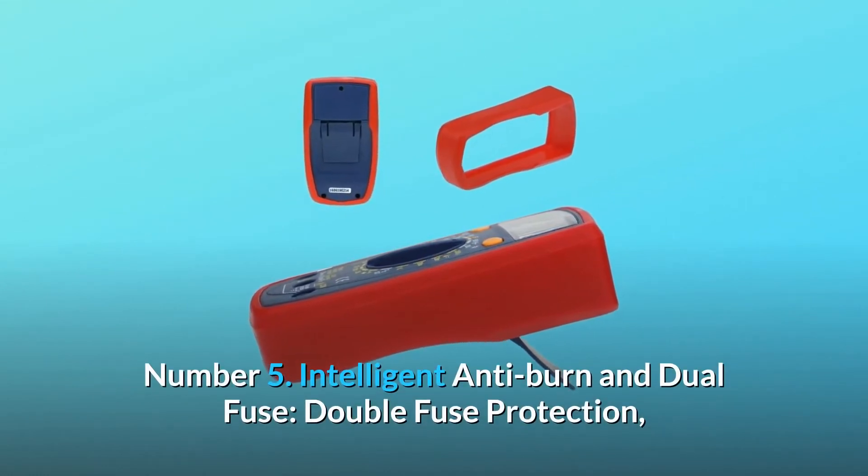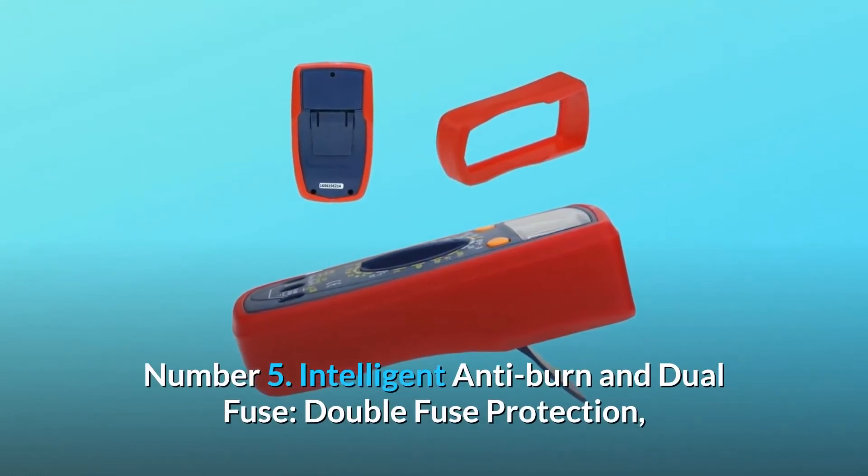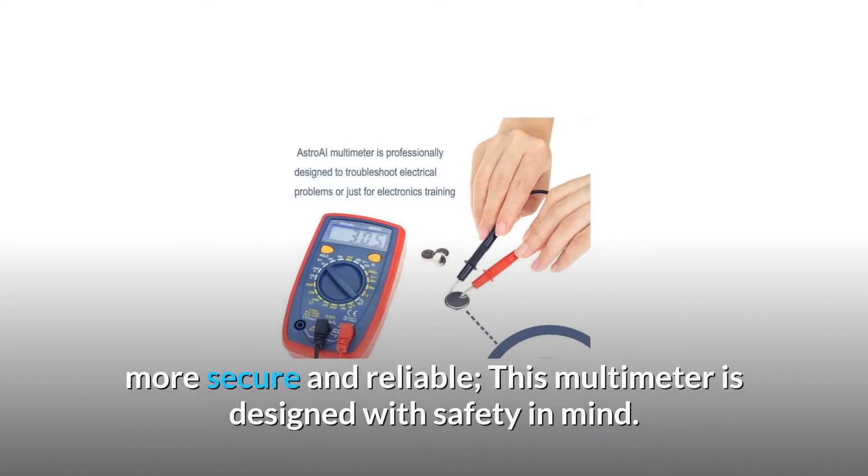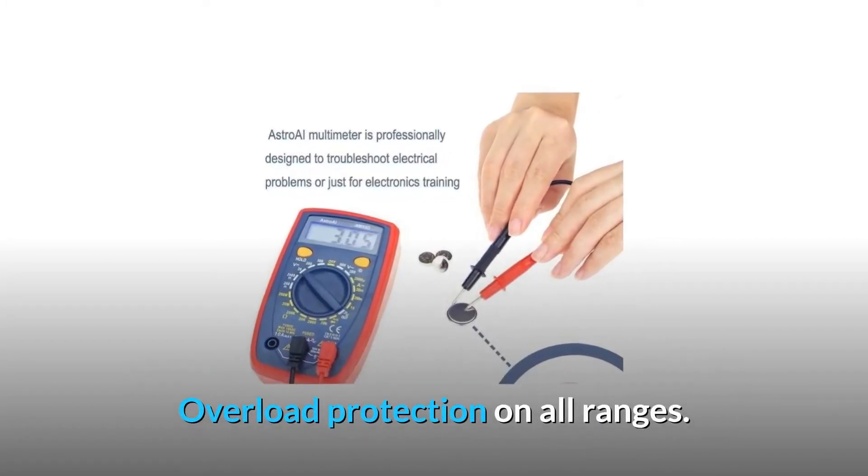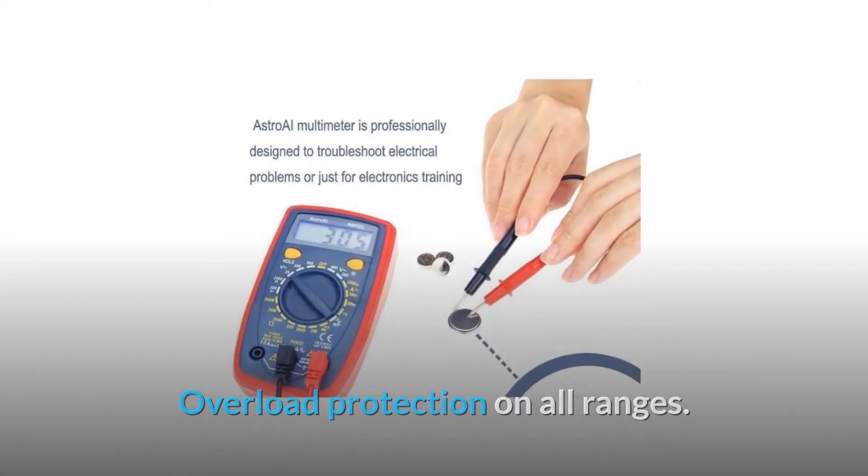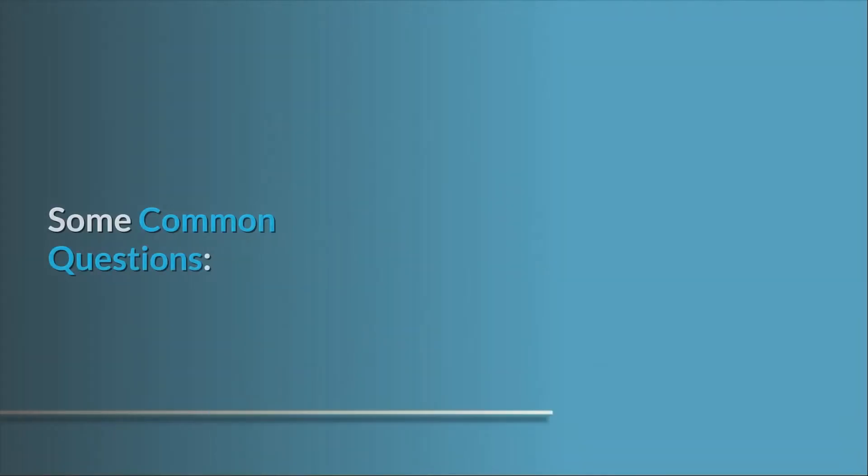Number 5: Intelligent anti-burn and dual-fuse. Double-fuse protection, more secure and reliable. This multimeter is designed with safety in mind. Overload protection on all ranges. And so much more. Some common questions.